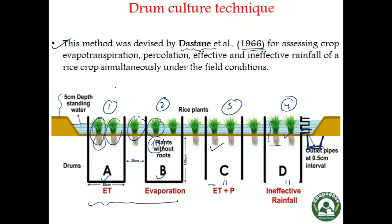The water loss in drum one is due to evapotranspiration only, because leaching loss and percolation cannot occur here as there is a bottom. So the reduction in water level in drum one indicates only evapotranspiration loss — that is, evaporation from the soil surface and transpiration from the living plant. Coming to drum two, there is no root, so the plants are dead. Transpiration is not there, but evaporation is there, and percolation is also not there because the bottom is present. So the reduction in water level in drum two is due to evaporation only.